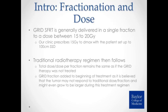For GRID SFRT, fractionation is generally delivered as a single fraction to a dose between 15 to 20 gray. Here at our clinic, we solely use 15 gray, though values of 15, 18, and 20 have all been used. We always use 100 centimeters SSD. At our clinic, we do the GRID prior to external beam radiation, following with the traditional radiation therapy regimen, whether definitive or palliative. We don't take this GRID dose into account in the cumulative dose — in theory the GRID is only treating areas of the tumor, so we treat to the same dose level we would have without the GRID.